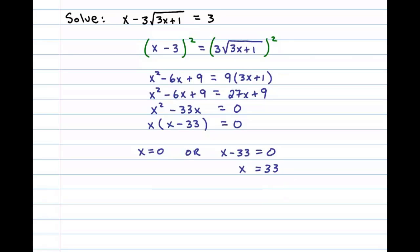So let's check those. Substituting x equals 0 into the original equation, we have 0 minus 3 times the square root of 1. Does that equal 3? Well, here you can see negative 3 does not equal 3, so x equals 0 is an extraneous solution. We'll disregard that.